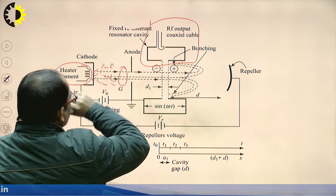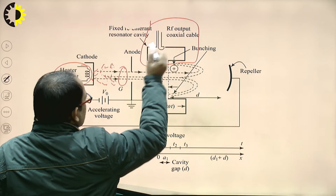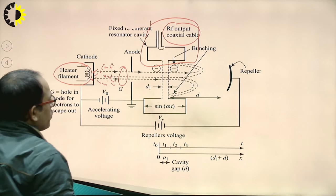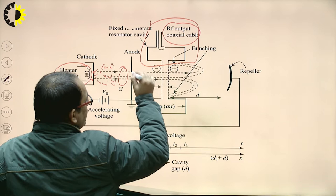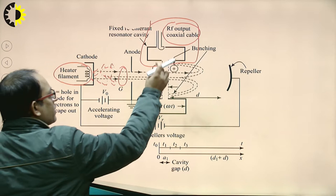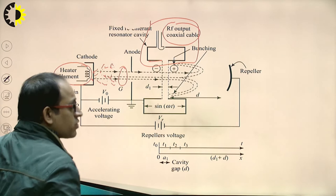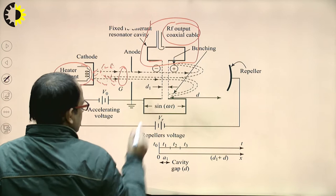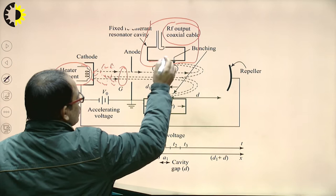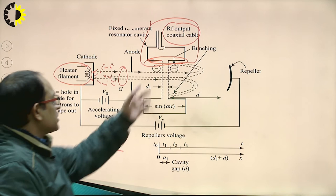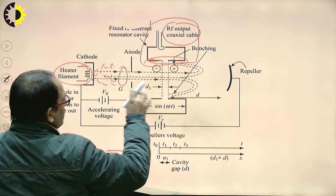It has an RF coaxial cable and some voltage is applied around this cavity. When the positive voltage is present, it accelerates the electrons towards the repeller. When there is a negative cycle at this plate, the electron gets de-accelerated. When there is zero voltage, the electron beam velocity remains the same. Due to this change in velocity, velocity modulation takes place.